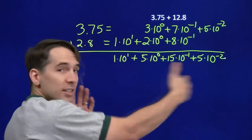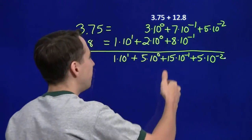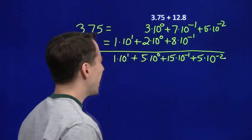And now if we wanted to sit down and just write this out as a decimal number, we've got a 1 in the tens place, 5 in the units place, and a 15 in the tenths place. What's that all about?